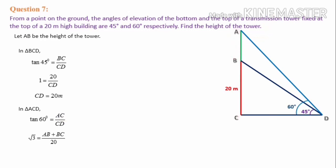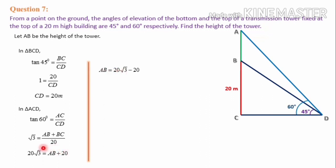In the larger triangle ACD (angle 60°): tan 60 = AC/CD, so √3 = (AB + BC)/CD. Substituting: √3 = (AB + 20)/20, so 20√3 = AB + 20, giving AB = 20√3 − 20 = 20(√3 − 1) meters. Therefore, the height of the tower is 20(√3 − 1) meters.